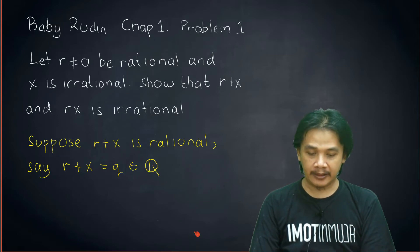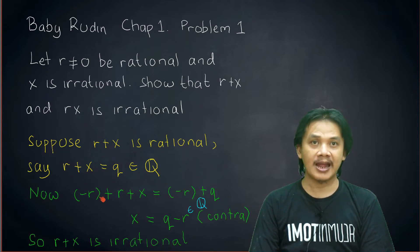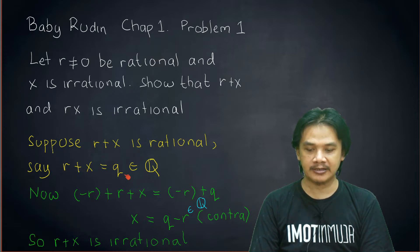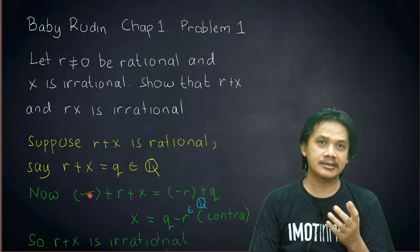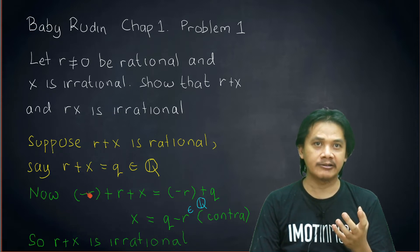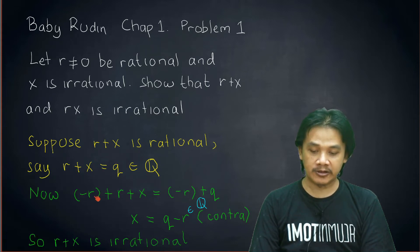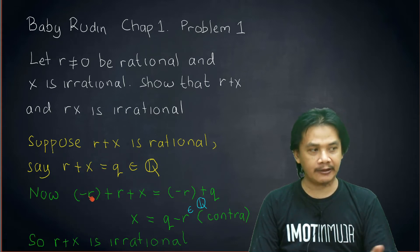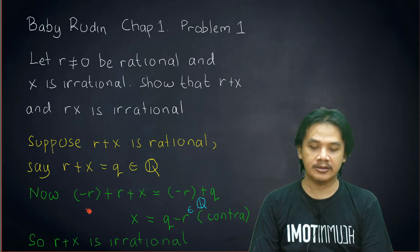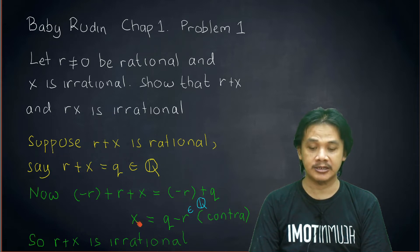Okay, and then from this equation we're gonna add -r to the left of each side. Remember that -r is the inverse of r under addition. So when we add -r plus r, we get 0. So the left-hand side will turn into 0+x, which is just x.